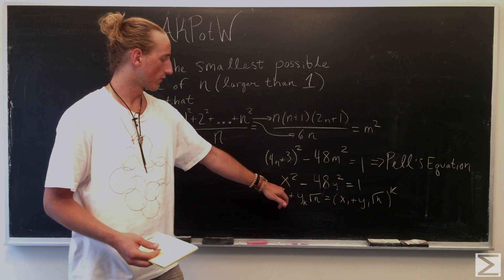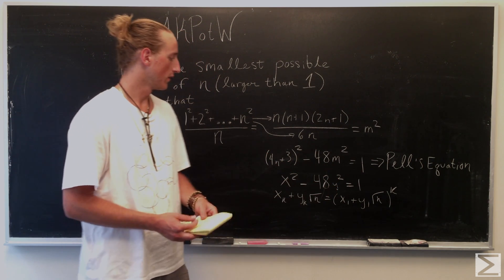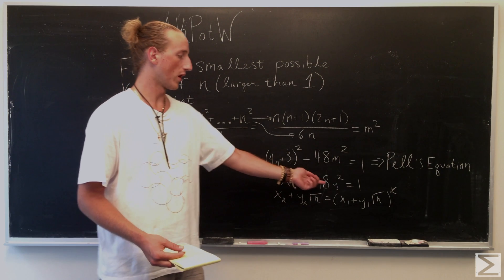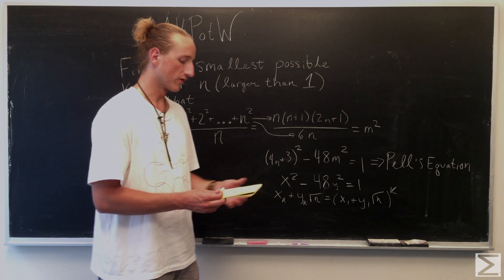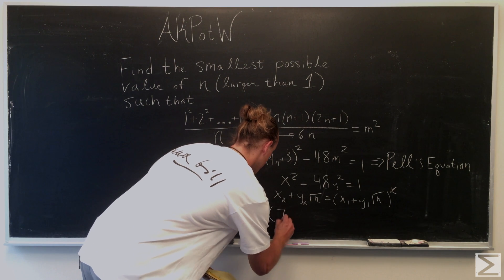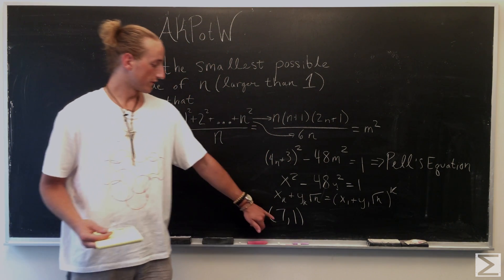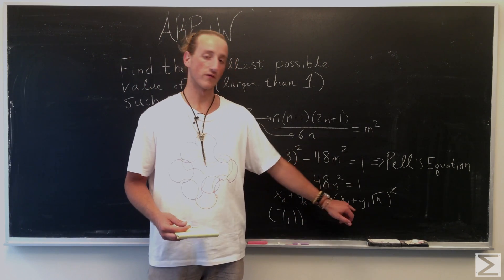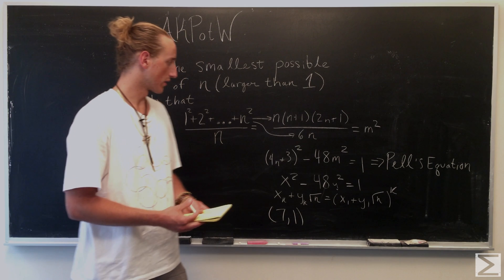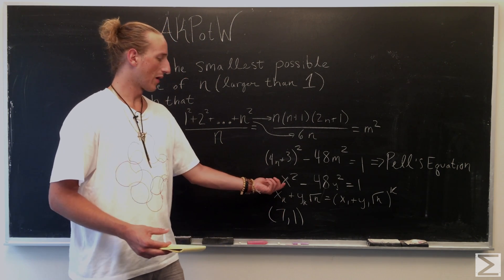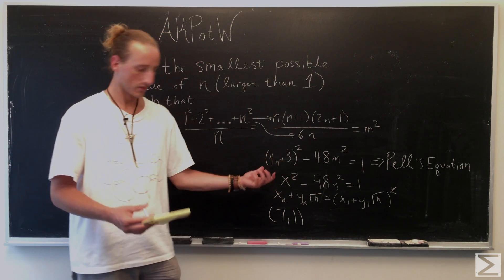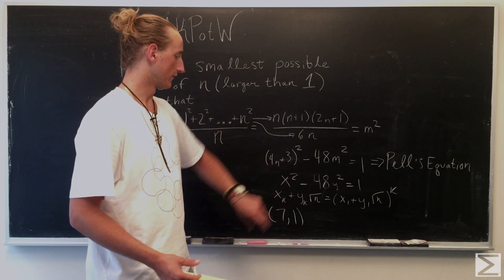Looking at the formula x squared minus 48y squared equals 1, it's easy to see that with x being 7 — so x squared being 49 — and y just being 1, we get 49 minus 48 equals 1. So the fundamental solution for this equation is just (7, 1). With this fundamental solution, we can plug in x₁ and y₁ to look for more cases where our x is going to fit the form 4n + 3.